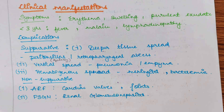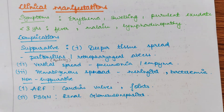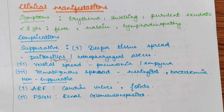Hematogenous spread means spread through the blood, which can cause meningitis and bacteremia. Bacteremia refers to the presence of bacteria in the blood. The non-suppurative complications include ARF, which means acute rheumatic fever. This bacteria, after some time, affects the cardiac valves and joints. It is not common and is seen in only less than 3% of people.